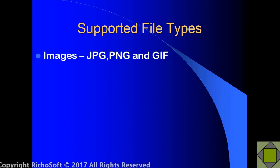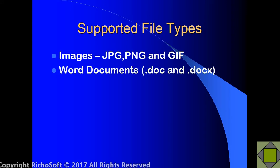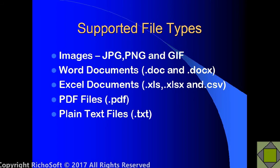The supported file types for uploads are: images — JPEG, PNG and GIF; Word documents — DOC and DOCX; Excel documents — XLS, XLSX and CSV; PDF files; and plain text files. You can select any of those as being allowed. So if you only want users to upload images, you can disallow Word documents, Excel documents, PDF files and plain text files just at the click of a button.